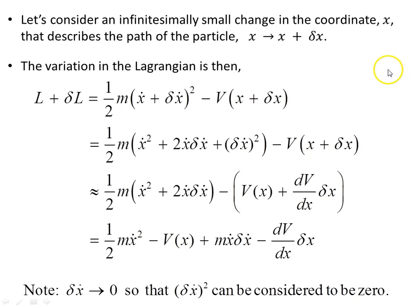Now to vary the action, we do that by varying the coordinate x, which specifies the path the particle follows. So we get x, and then we vary it with this δx term. So the variation in the Lagrangian is then the Lagrangian, the original one, plus the variation part. And we do that by varying the coordinate x. So we substitute that in, this expression here.